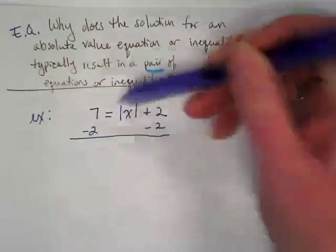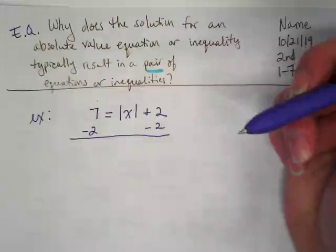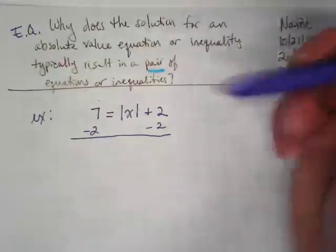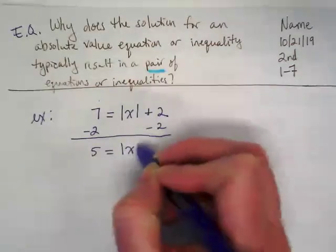When I first look at this, I see a constant here and a constant here. They're like terms. We're just trying to get them together, right? So I end up with 5 is equal to the absolute value of X.